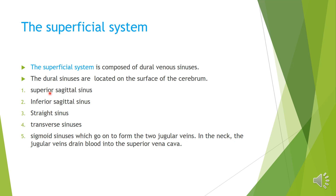There are five dural venous sinuses: superior sagittal sinus, inferior sagittal sinus, straight sinus, transverse sinus and sigmoid sinus. These five dural venous sinuses form the superficial venous drainage system of the brain. The sigmoid sinus continues to form two internal jugular veins on both sides.